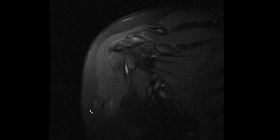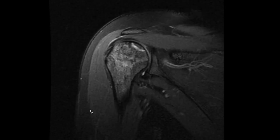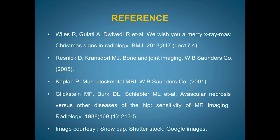In summary, the double line sign on MRI and the snow cap sign on radiograph are seen in cases of bone infarcts and avascular necrosis, especially in patients with sickle cell disease. Thank you very much.